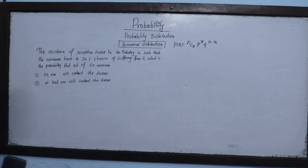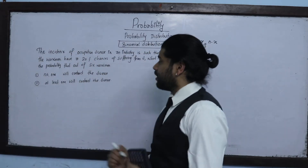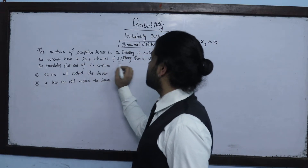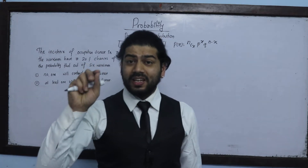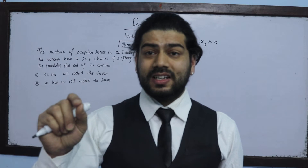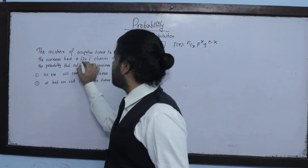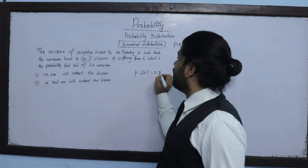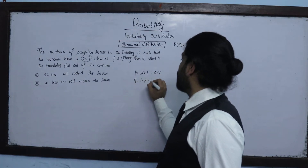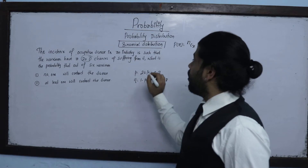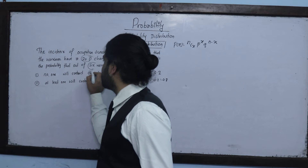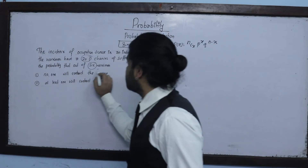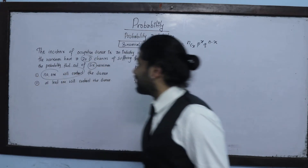The incidence of occupational disease in an industry is such that the workmen have 20% chances of suffering from it. What is the probability that out of 6 workmen, no one will contract the disease?